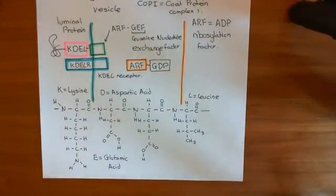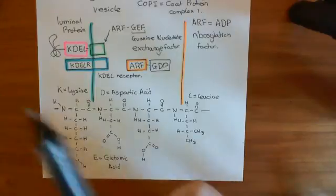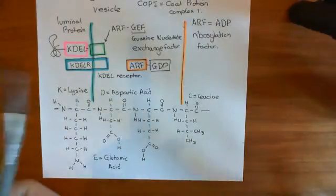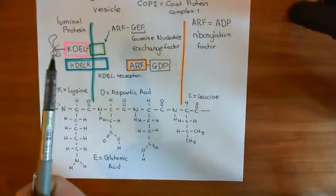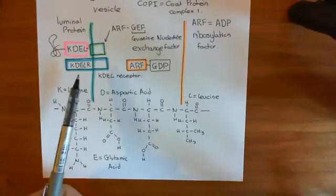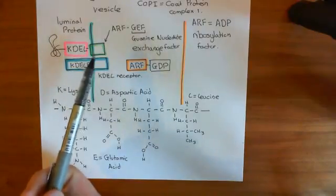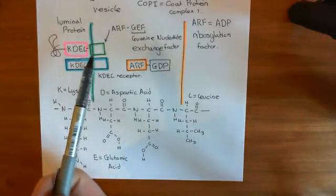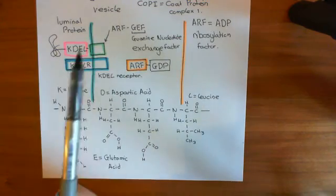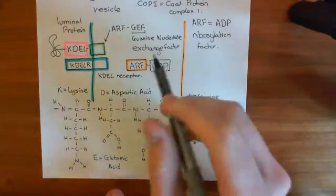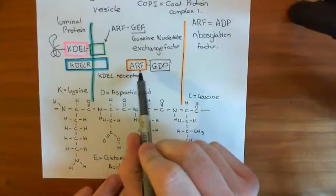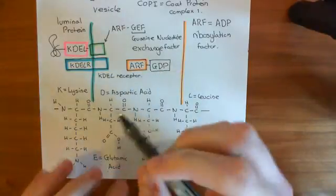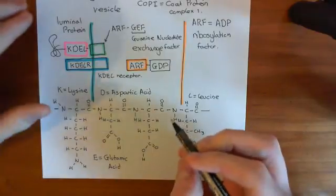Welcome to this next video in which we are studying Golgi-to-ER, or retrograde transport. We've seen how if we have a luminal protein with this KDEL sequence in it, then it will bind to the KDEL receptor, activate the KDEL receptor, which will then bind and activate the ADP ribosylation factor guanine nucleotide exchange factor — the ARF-GEF — which is now going to take the inactive ARF protein, which has GDP bound to it, and instead swap that GDP for a GTP.